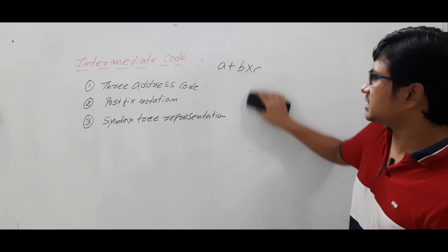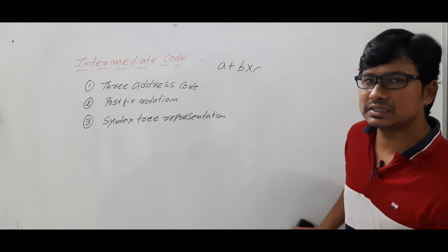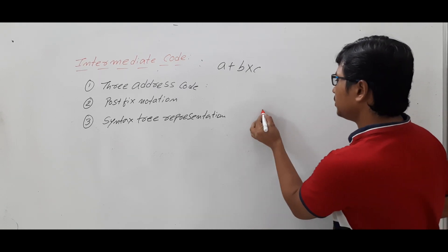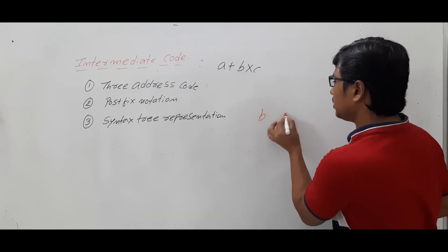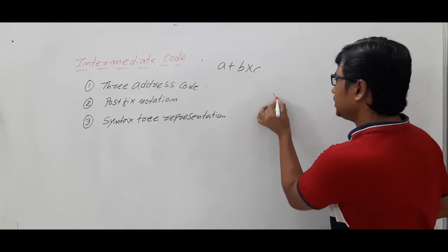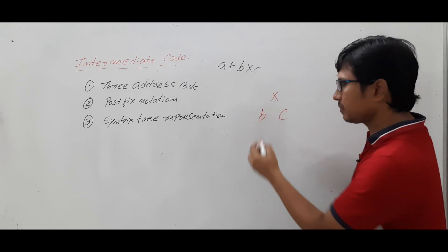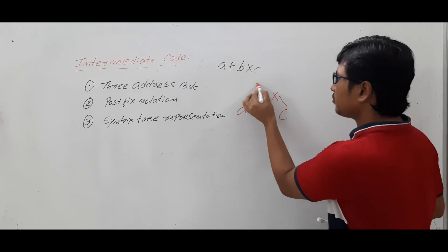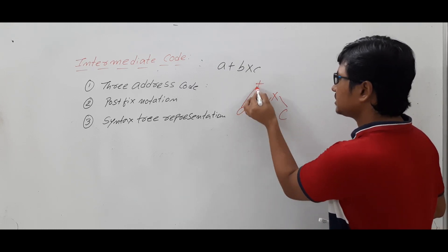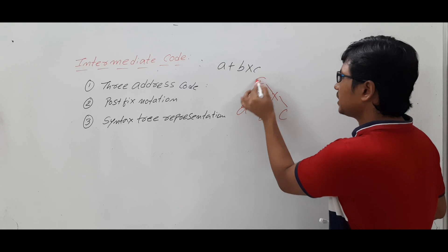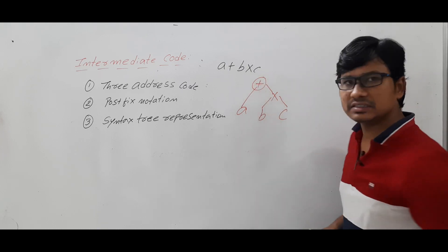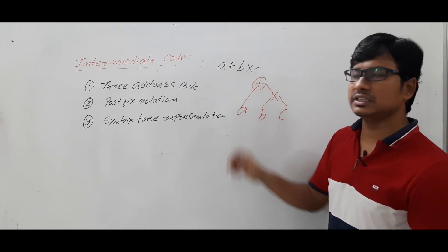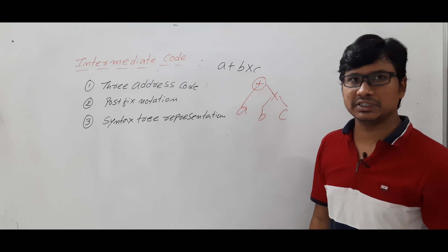Now let me discuss the syntax tree representation. For the expression a + b * c, first we perform b * c as a subtree with the multiplication operator at the node. Then the result is used in the addition with a to get the final result. This is the syntax tree representation for this expression.